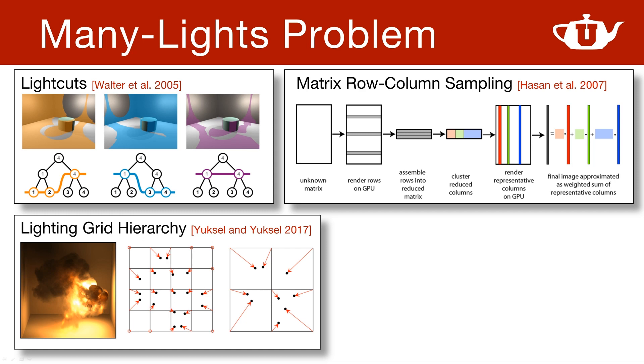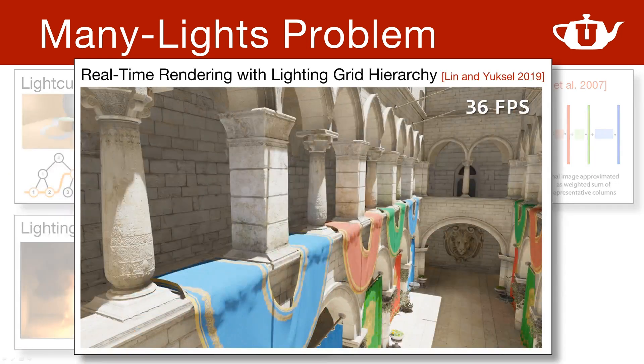The lighting grid hierarchy we introduced at SIGGRAPH 2017 takes a different approach that is temporally stable. In the context of explosion rendering, it also provides orders of magnitude faster solution than light cuts, even though it actually samples more light sources than light cuts. At i3D this year, we've also shown that the lighting grid hierarchy method allows real-time computation of global illumination with virtual lights. We could render images including global illumination within 30 milliseconds or less, but it still considers a fairly large number of light samples per pixel, and its efficiency comes from exploiting the properties of rasterization, deferred shading, GPU ray tracing, and shadow ratio estimation.